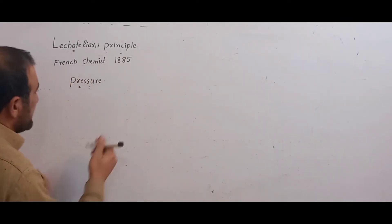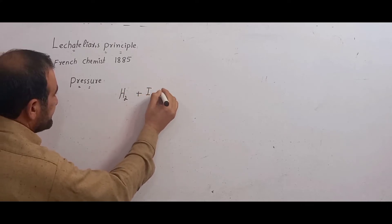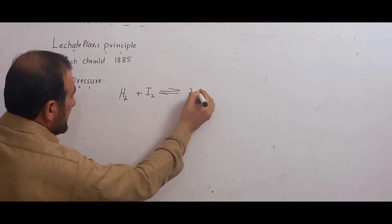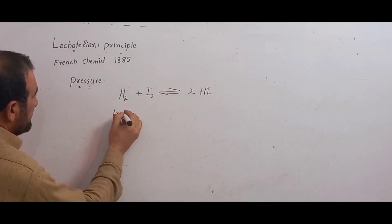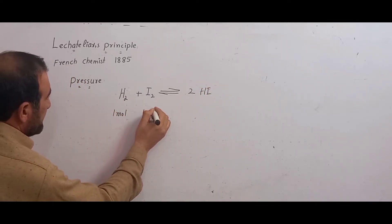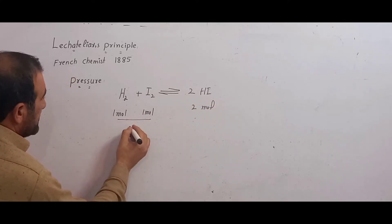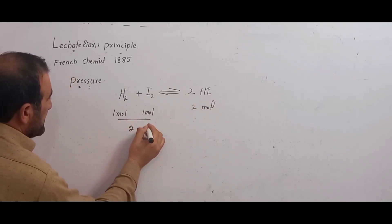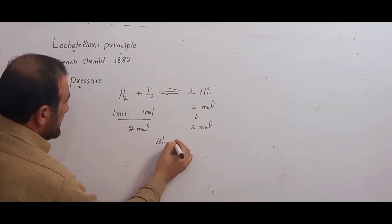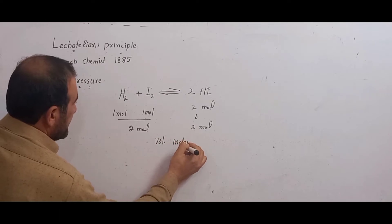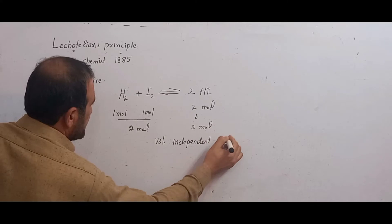Consider this system: H₂ + I₂ ⇌ 2HI. The reactant side has 1 mole of H₂ and 1 mole of I₂, giving a total of 2 moles. The product side has 2 moles of HI. The reactant total is 2 moles and the product total is 2 moles.